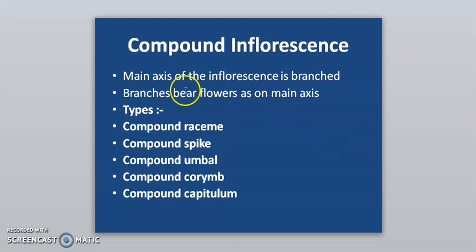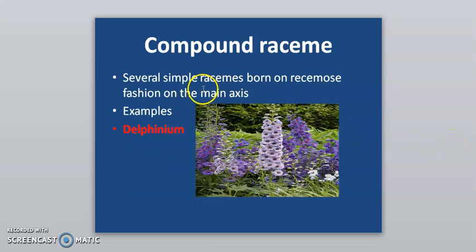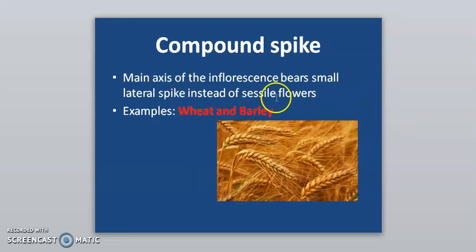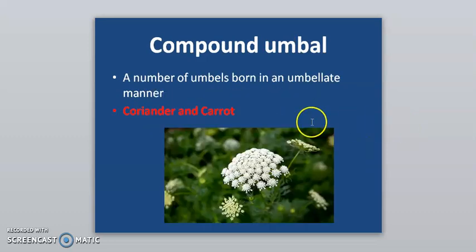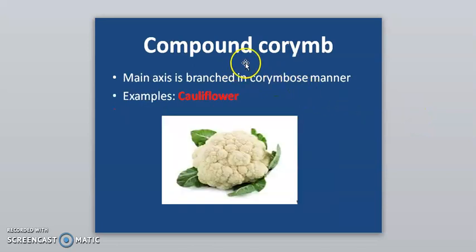In compound inflorescence, the main axis of the inflorescence is branched and branches bear flowers as on the main axis. Types include compound raceme, compound spike, compound umbel, compound corymb, and compound capitulum. Compound raceme: several simple racemes are borne on a racemose main axis — example is Delphinium. Compound spike: the main axis bears small lateral spikes instead of single flowers — example is wheat and barley. Compound umbel: a number of umbels are borne in an umbellate manner — example is coriander and carrot. Compound corymb: the main axis is branched in a corymbose manner — example is cauliflower.